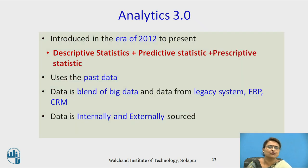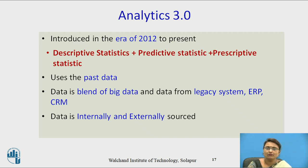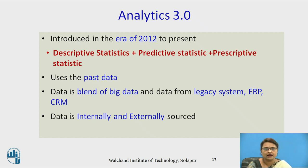Analytics 3.0 was introduced in 2012 and continues to the present. It is a combination of descriptive, predictive, and prescriptive statistics. It uses past data but is a blend of big data, getting data from legacy systems, ERP, CRM, externally sourced data, and internally sourced data — everything. It provides better prediction about how to make something happen for a particular future goal.